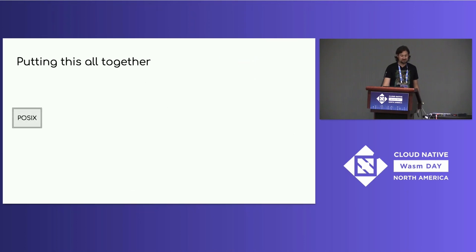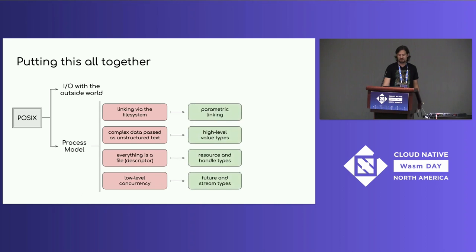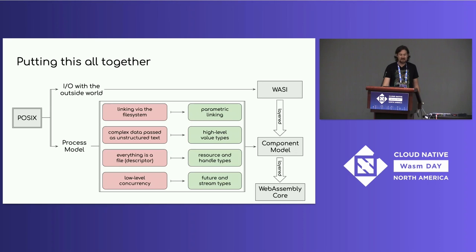Putting this all together: we started with POSIX, which defines IO with the outside world and a process model. We identified four pain points with the process model and four proposed design alternatives — performing that substitution is the component model. It's layered on top of WebAssembly core, with WebAssembly providing the portable instruction set that we can bundle up into abstract black-box reusable units of code. This frees up WASI to do what it was originally started to do — define IO with the outside world — being layered on top of the component model and able to define modular interfaces for things like logging, config, file system, sockets, gRPC, and more.